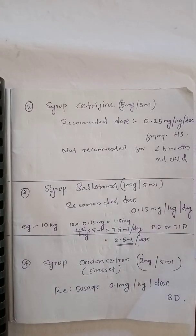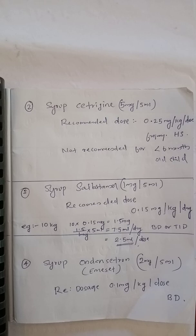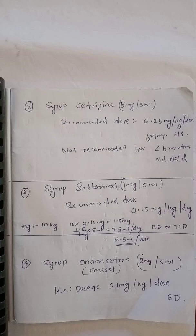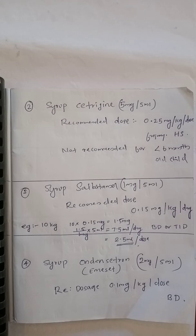Continuing pediatric dosage: Syrup cetirizine in 5 mg per 5 ml strength is available in the market, as well as levocetirizine 2.5 mg per 5 ml syrup. The recommended dose is 0.25 mg per kg per dose, frequency is HS (before bedtime). Not recommended for children less than 6 months because of mild sedation.